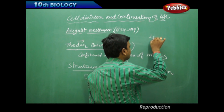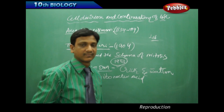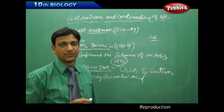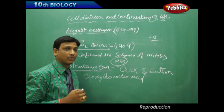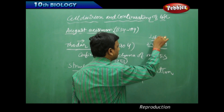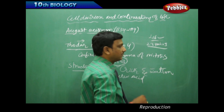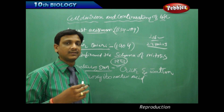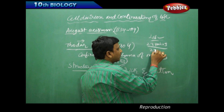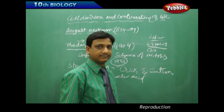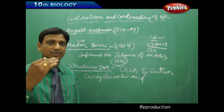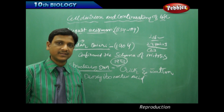The number of chromosomes in humans is 46 — that means 23 pairs. But in the case of a human male or female gamete, you will find only 23 chromosomes, not 23 pairs. So the number of chromosomes is reduced to half in meiotic division.